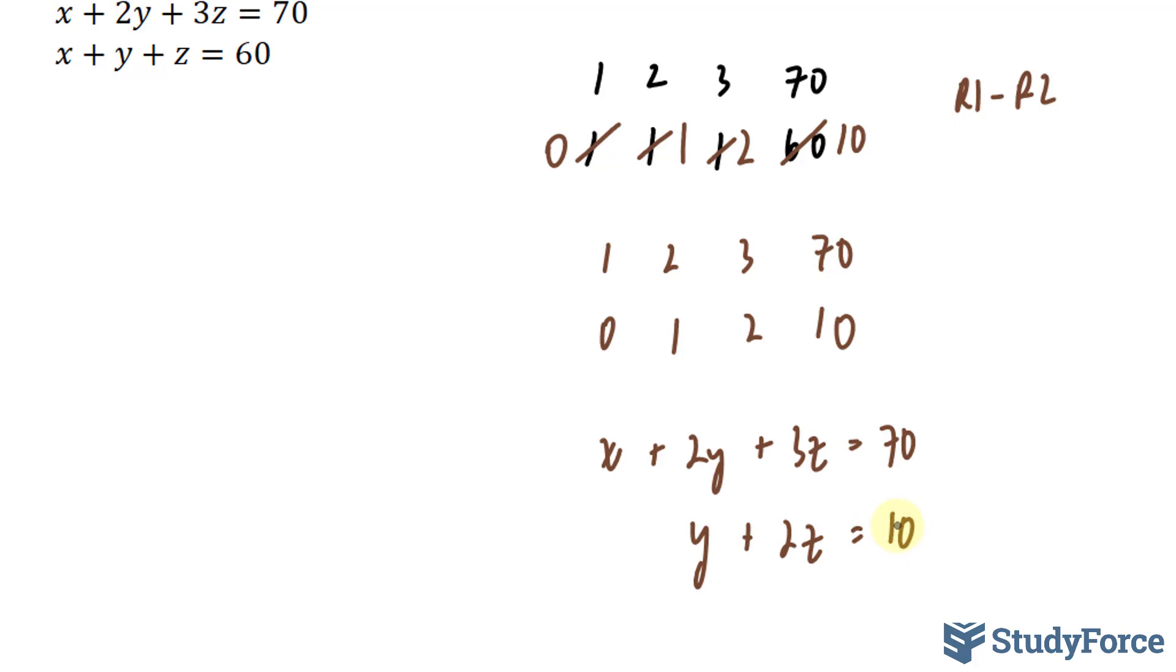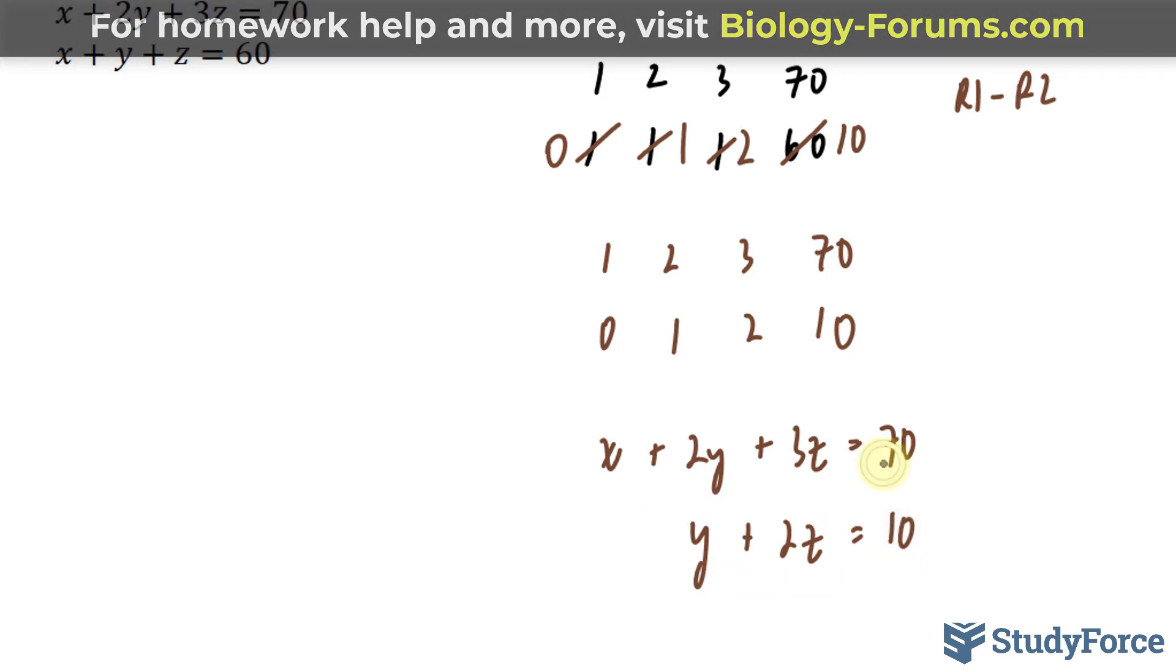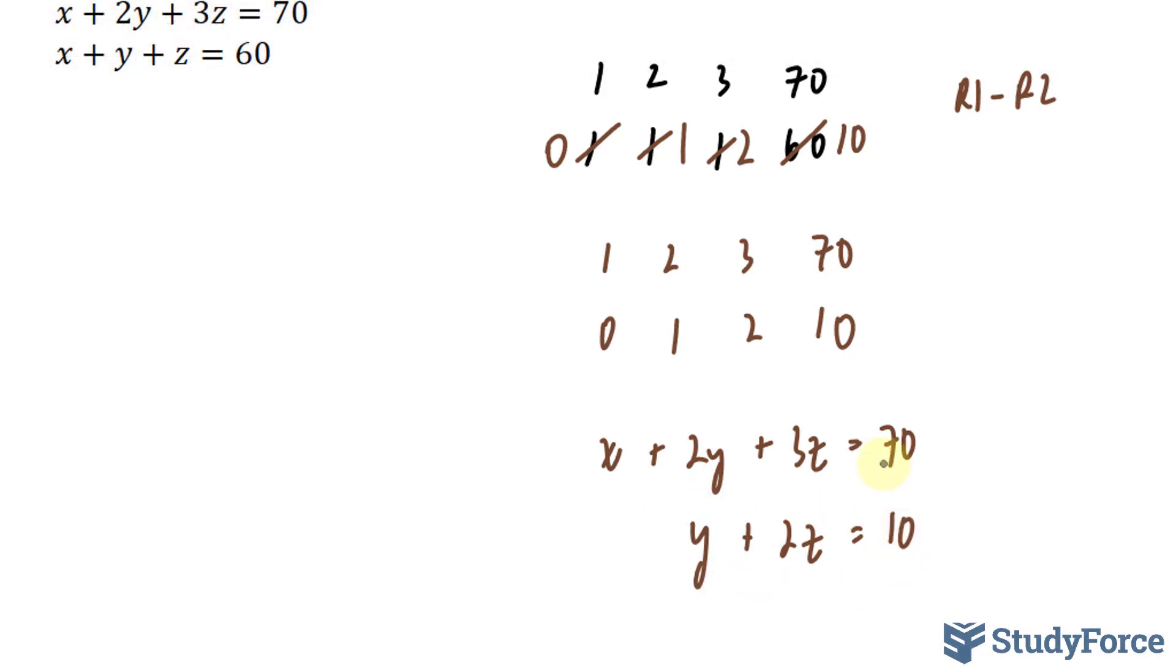Now we have to find a generic solution set for this system. And the way I can do that is I'll start off with this equation and solve for y. So if I solve for y in this equation, I'll end up with y is equal to ten minus two z. So this expression right here represents all of my y coordinates, ten minus two z.